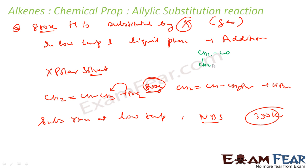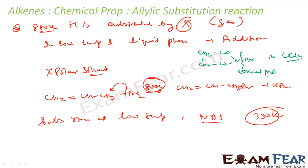NBS has the structure with CH2-CO groups, and we use it in CCl4 solution because CCl4 is inert. The N-Br bond in NBS is very, very weak — only about 50 kilocalories per mole — so it easily forms a bromine free radical, especially in the presence of sunlight.